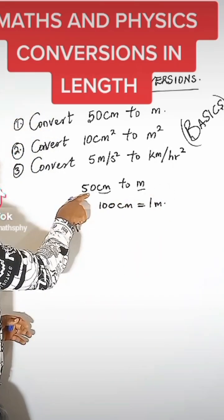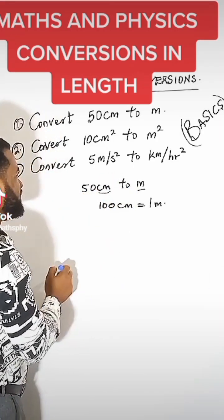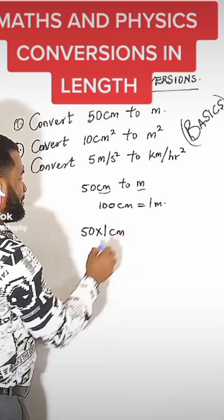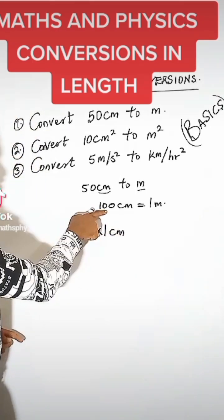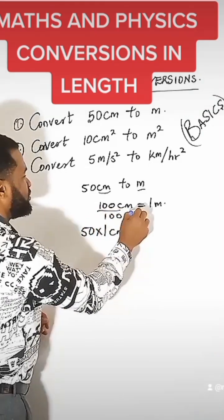All right, now you want to convert from cm to meter. So this is the same thing I'm saying: 50 times 1 cm. Now what is 1 cm? To get 1 cm, I'm dividing by 100.